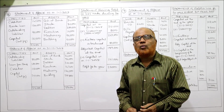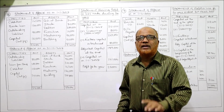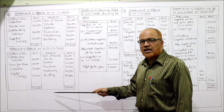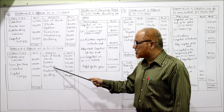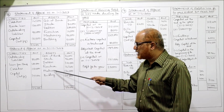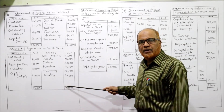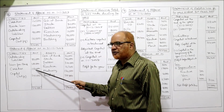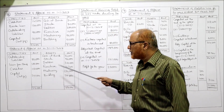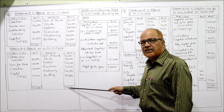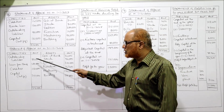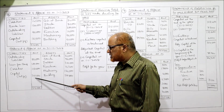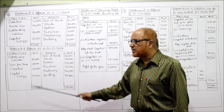Similarly, statement of affairs at the end of the year, 31st December 2008. Assets taken: cash at bank, stock, debtors, furniture, machinery, and building. Liabilities: outstanding liability, loan from bank, and creditors. Total assets 5,91,000. Deduct 80,000, 1,00,000, and 1,50,000. Capital — balancing figure at end of year — is 2,61,000.